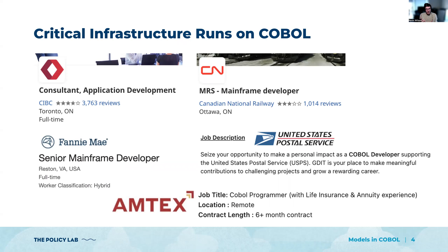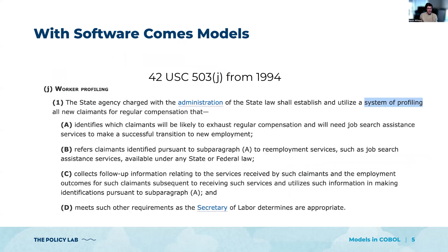It turns out if you're super critical, it starts to be that Congress writes laws about you. Over the years, Congress has started to require that a lot of these systems actually build models on top of the data they're pulling in. Ed and I got into this game in particular because of this law, 42 USC 503J, a law from 1994 that requires that every state in the United States unemployment insurance system implement a system of profiling all claimants. So if you lose your job and you ask for unemployment compensation, you're going to be run through one of these models.